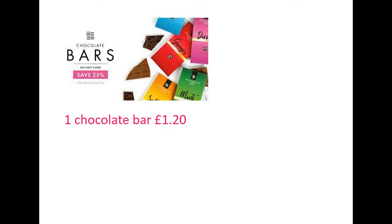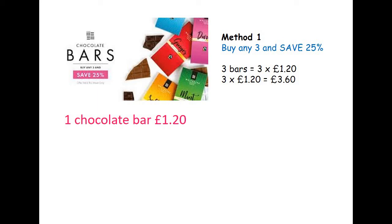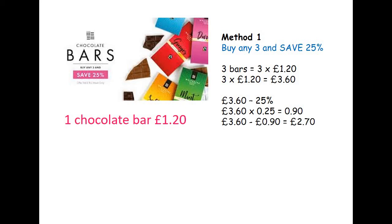Last example. If you buy three chocolate bars, you get 25% off the cost. The original price of three chocolate bars is £3.60 — three lots of £1.20. We want to take 25% off that. Using Method 1, 25% is 0.25. Multiplying £3.60 by 0.25 gives us 90 pence. So 90 pence is taken off the cost, leaving us with £2.70.